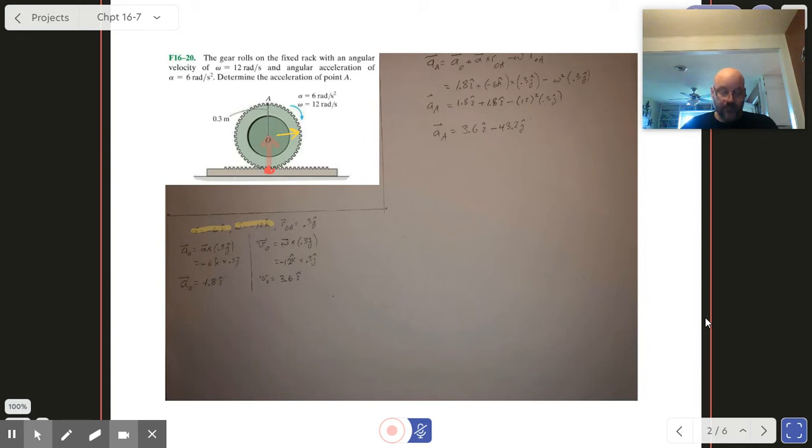Once we take out that cross product, we realize that what we are left with is 1.8 times i as our value for alpha. Now we could have done this a little more less formally, let's say.